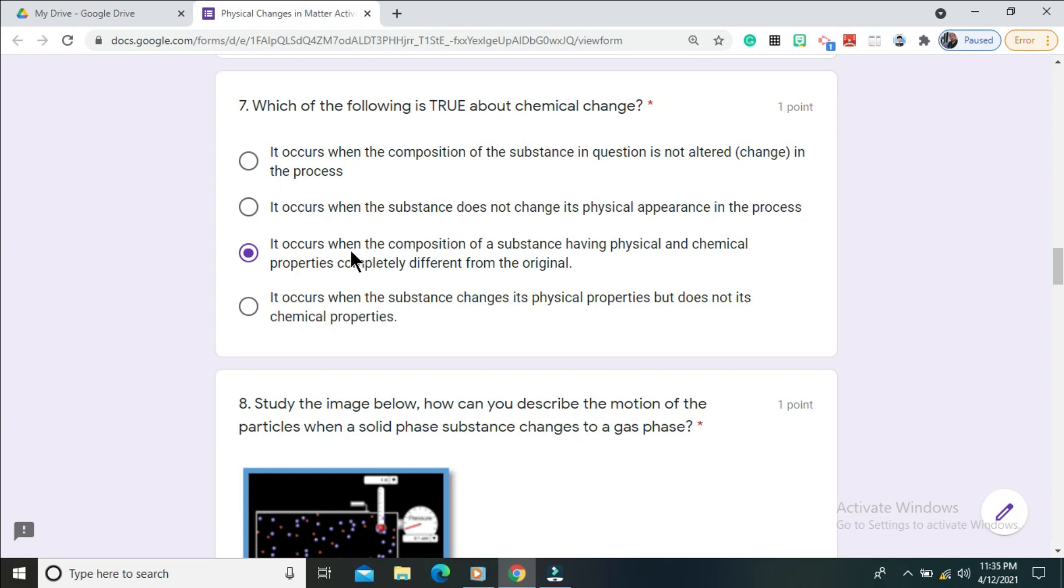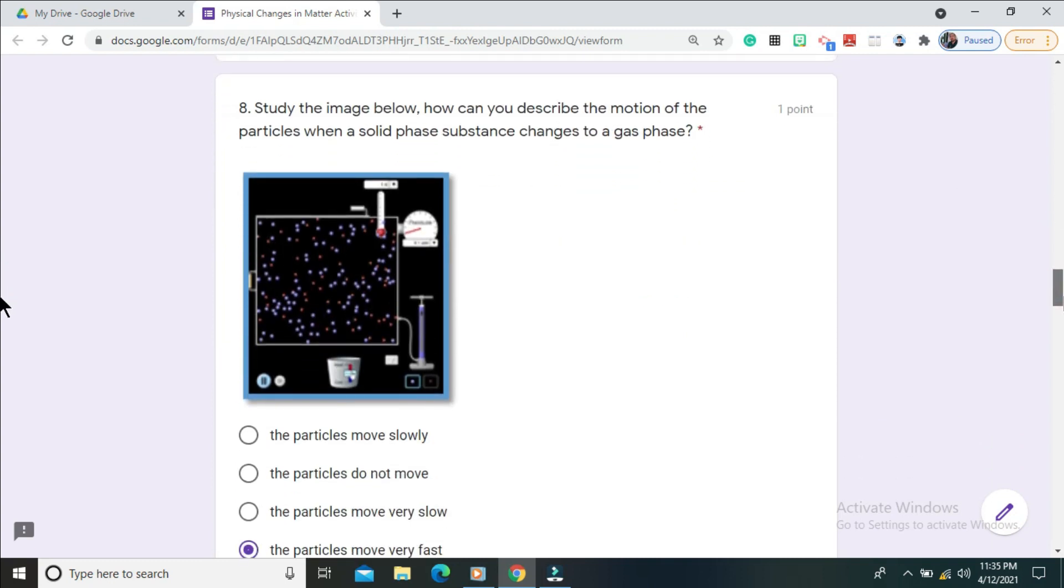The correct answer is it occurs when the composition of a substance having physical and chemical properties completely different from the original. Question number eight: study the image below, how can you describe the motion of the particles when a solid phase substance changes to a gas phase?